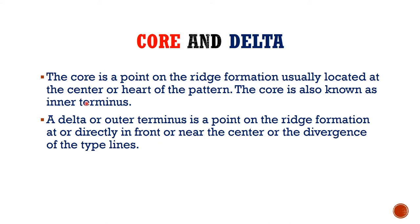The core is the point on the ridge formation usually located at the center, which is why it is called the core — it is at the center or heart of the pattern. The core is also known as the inner terminus, while the delta or outer terminus is a point on the ridge formation at or directly in front of or near the center or the divergence of the type lines.